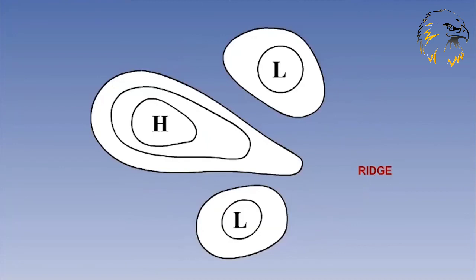By analyzing the pattern of the isobars, it is possible to see the shape of the high pressure. If we can see the isobars forming a finger-like protrusion away from the centre of the high, then we call this a ridge of high pressure.